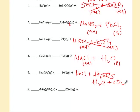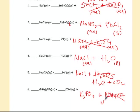The last one is K₃PO₄ plus NH₄OH. NH₄OH gives us NH₃ and H₂O. So once again, a reaction does occur and you would have to balance the reaction.